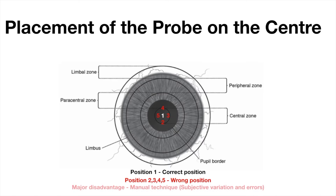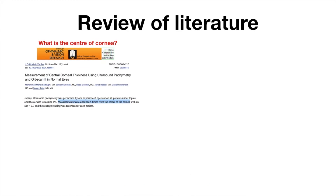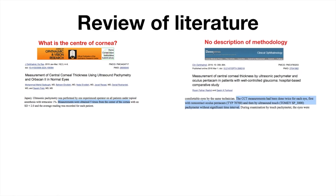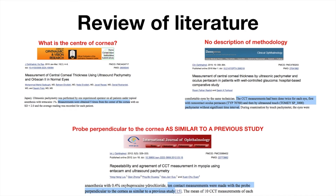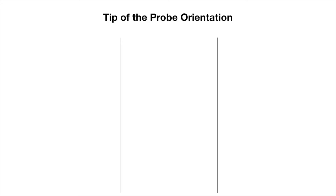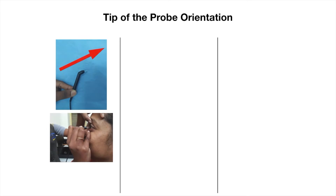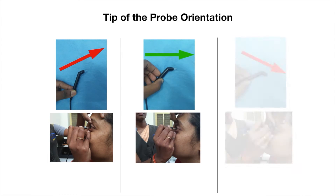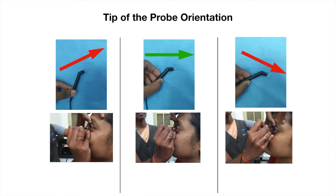To get a correct scientific explanation on performing CCT measurement, we referred to the literature. We were amazed to see that many studies avoided quoting how they measured the center, avoided their methodology, or quoted a previous study for their methodology. The investigator seemed to have more authority on choosing the center, which can lead to bias.